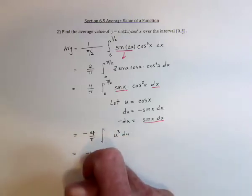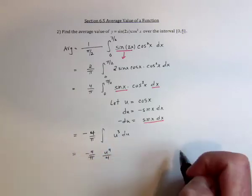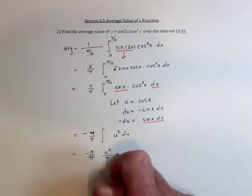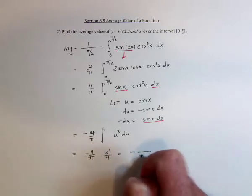So we've got negative 4 over pi. And then this is u to the 4 over 4. And the 4's are going to cancel. So we've got negative, and then the denominator, there's pi.